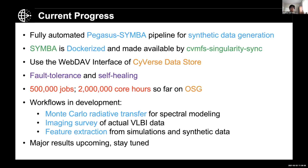There are other workflows we are trying to deploy to the Open Science Grid using Pegasus. I am personally working on using Monte Carlo radiative transfer to model the spectrum, which is computationally expensive enough to need Pegasus. We're also planning an imaging survey — image reconstruction is not unique, there can be millions of solutions — so we need to understand which image is correct. Feature extraction is another potential workflow in progress.